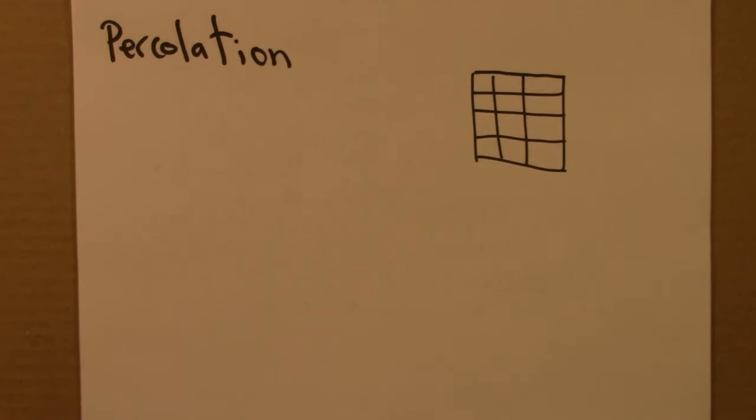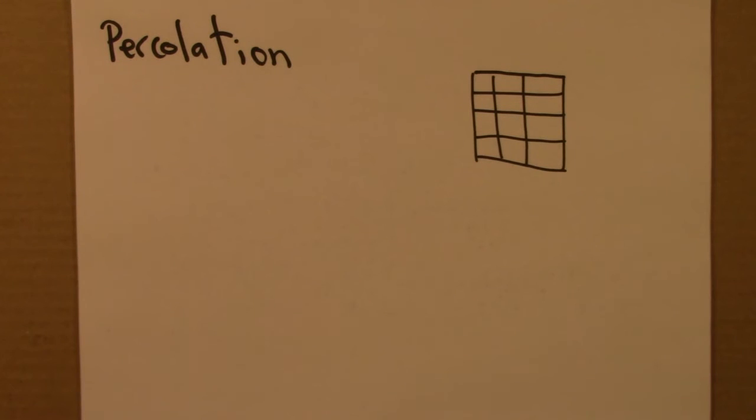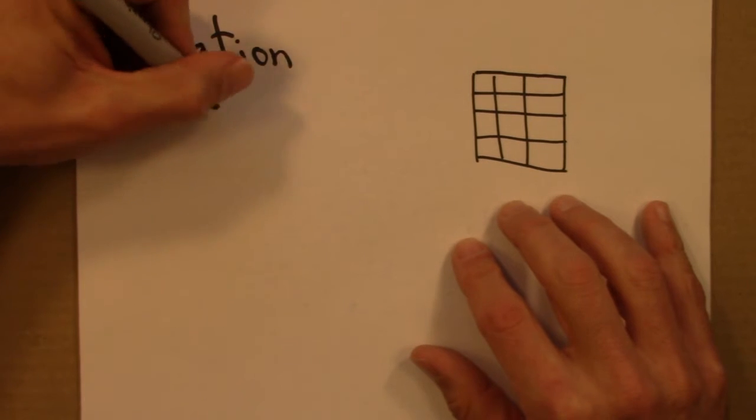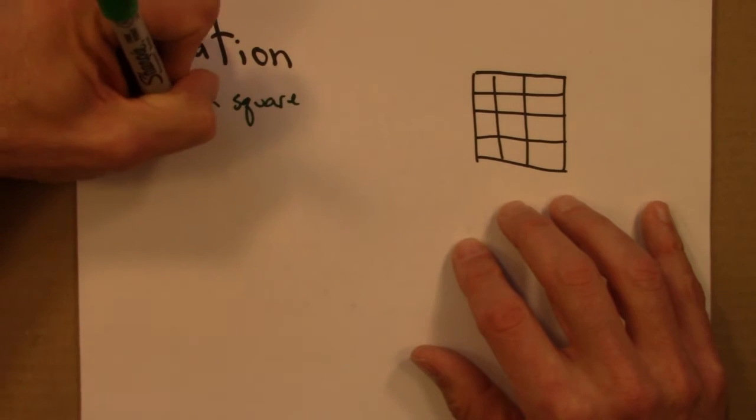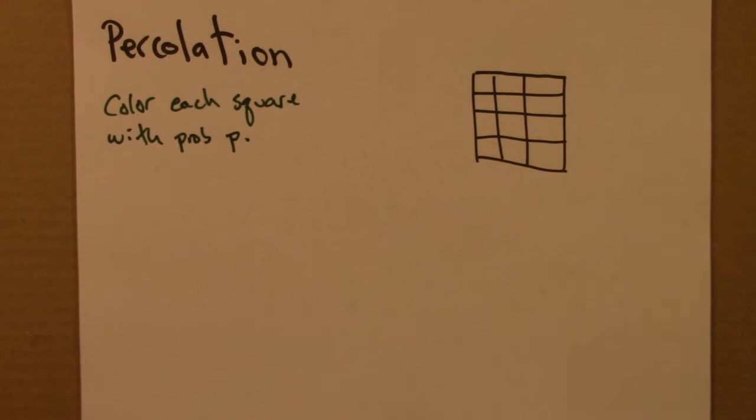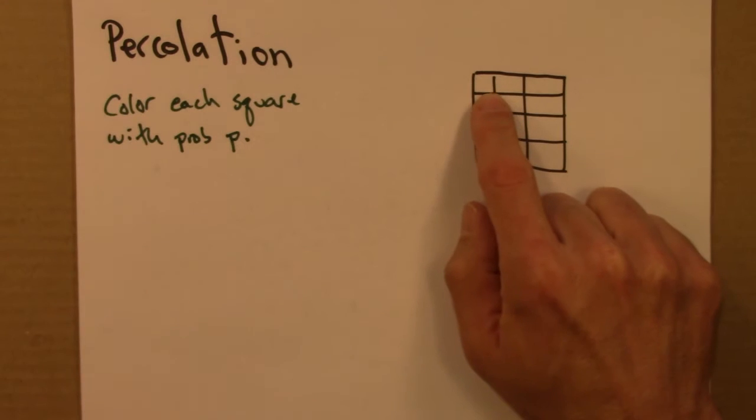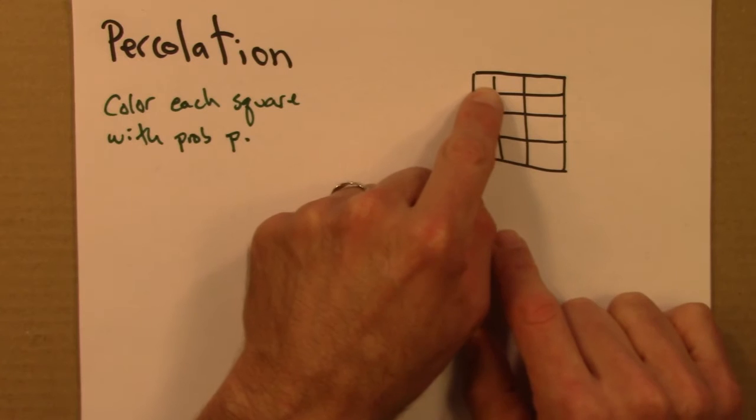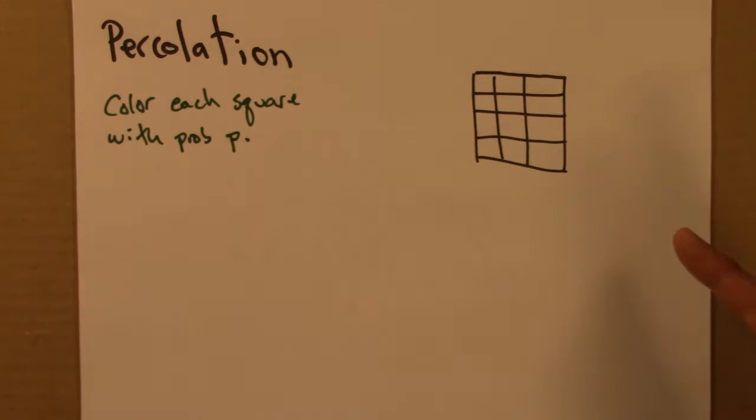And what we do is we would color in each square with some probability p. So maybe I would pick p to be 0.2, and then I would throw a five-sided die if such a thing existed, or use a random number generator and fill in this one with probability 0.2. Fill this one in with probability 0.2. So all the probabilities are independent.